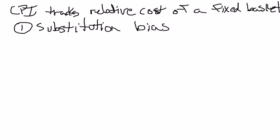For the Consumer Price Index to be an accurate measure of the cost of living, it's going to have to tell you how expensive it is for households to achieve some overall level of happiness. As it turns out, households don't buy the same fixed basket of goods over time. Households respond to changes in the economy, and in particular, they change in response to changes in the prices of these goods and services.